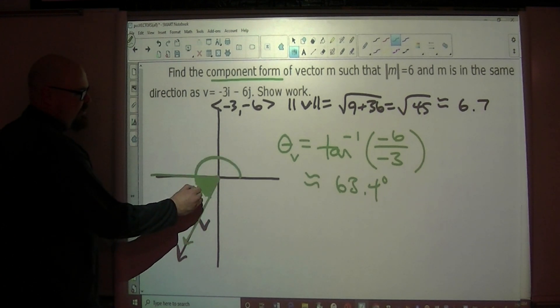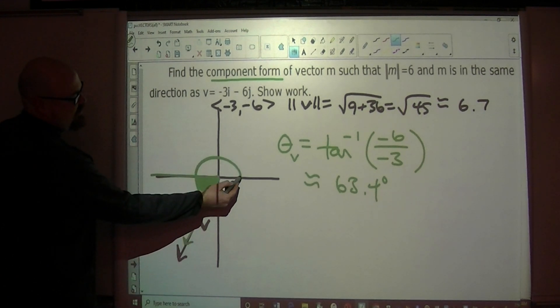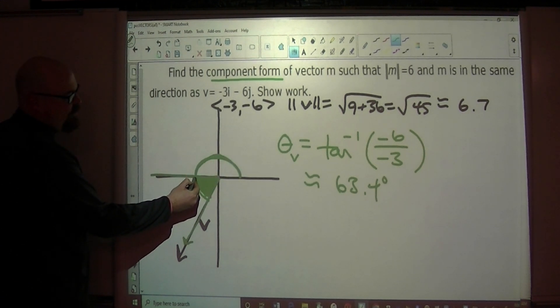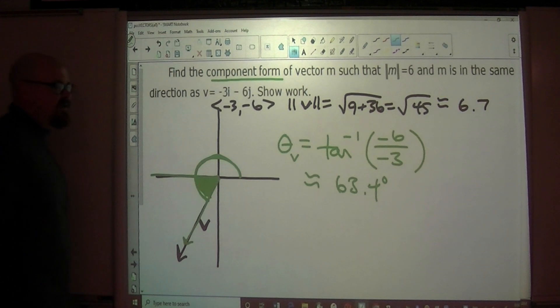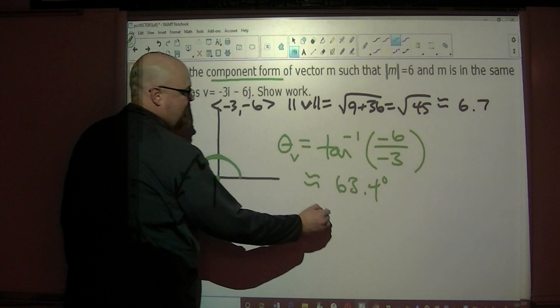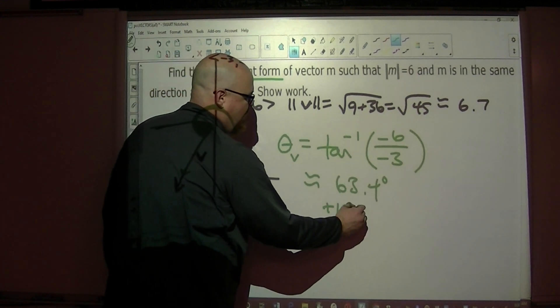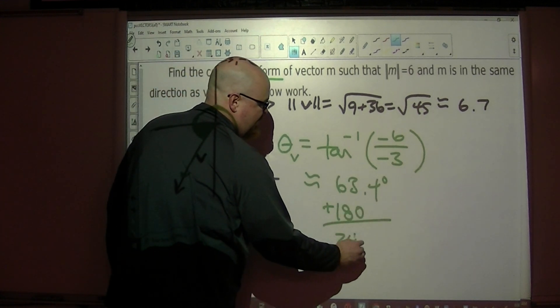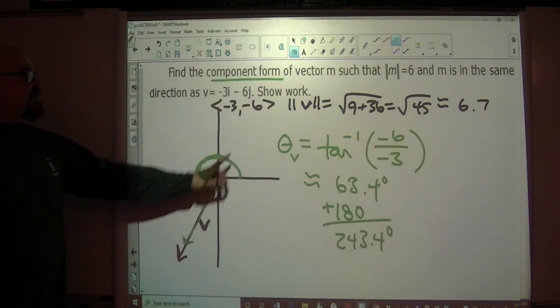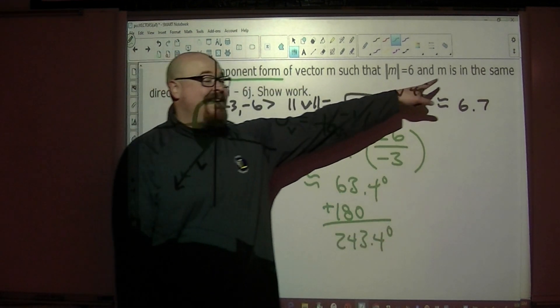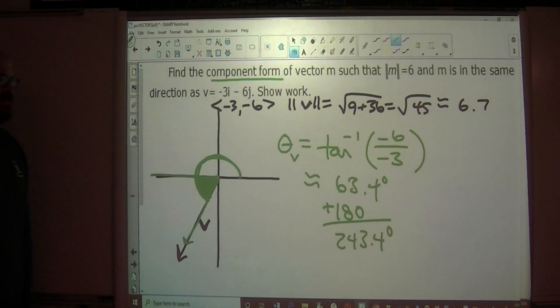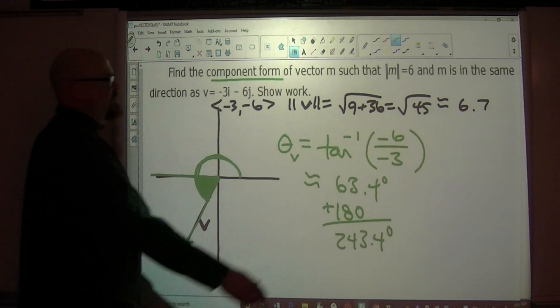So this is 63.4, so the direction angle of this actual vector goes all the way around. It starts here, it swings up through 90, over to here through 180, and then another 63.4 degrees. So the entire angle is 63 plus 180, which is 243.4 degrees. So vector m, which is in the same direction as vector v, also has this direction. It just has a different magnitude.